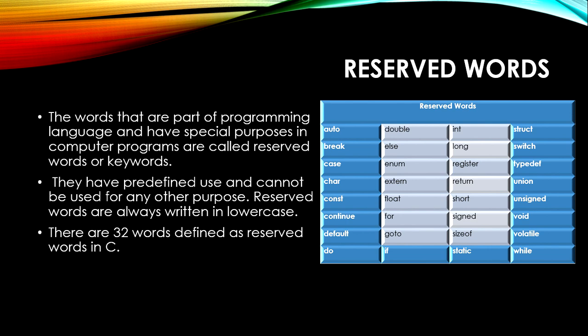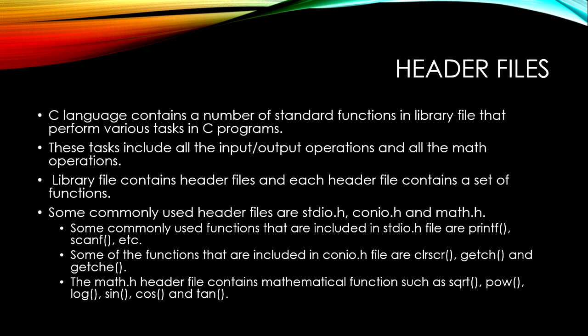For example, some reserve words are: auto, break, case, char, const, continue, default, do. All 32 words have different meanings. Now we will discuss header files. Header files are the most important part of any C program. C language contains a number of standard function library files that perform various tasks in a C program, including all input/output operations and math operations.